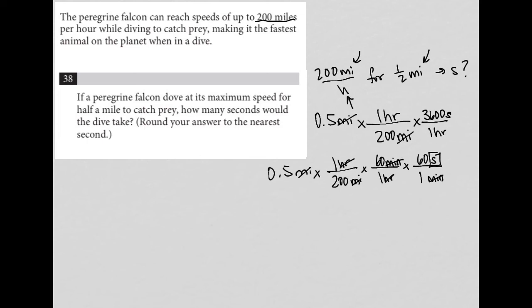Now I can go straight to my calculator. The numerator here is 0.5 times 60 times 60. That is 1,800. The denominator is 200, so 1,800 divided by 200 is nine seconds. Nine seconds should be the correct answer to this question.